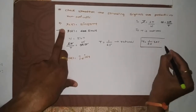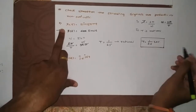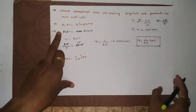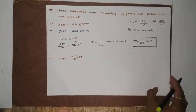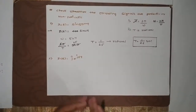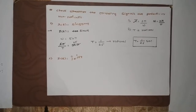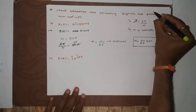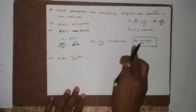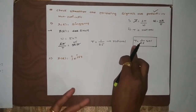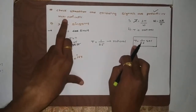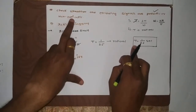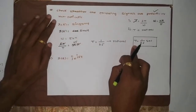The signal is going to repeat itself after every 1/25 seconds. A signal is said to be periodic if it repeats itself after a certain interval of time, for a continuous signal. If it does not repeat itself, it is a non-periodic signal.